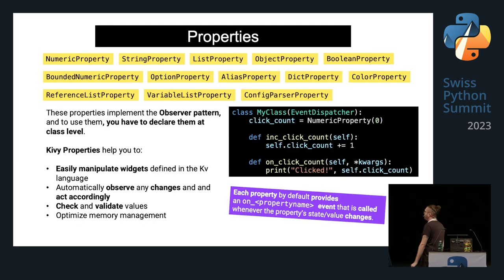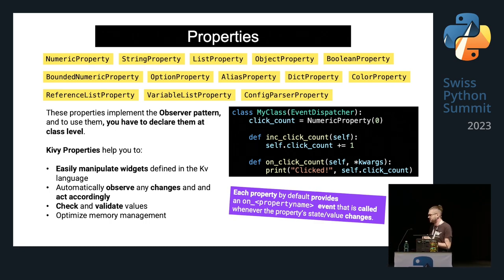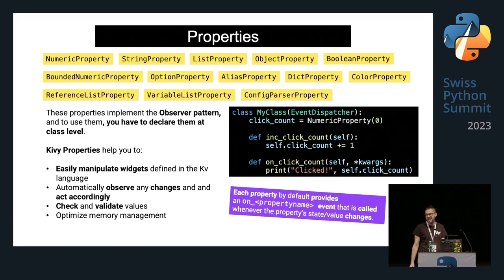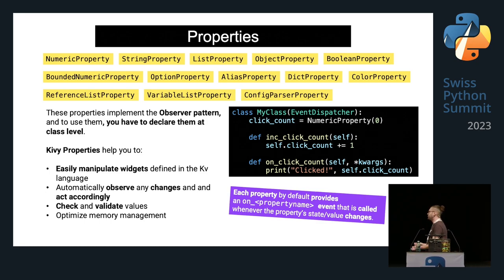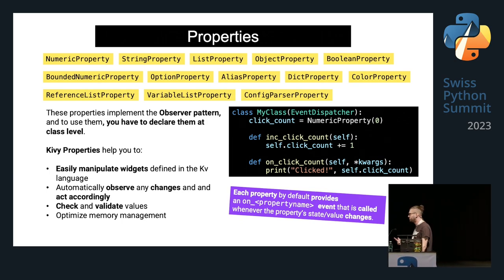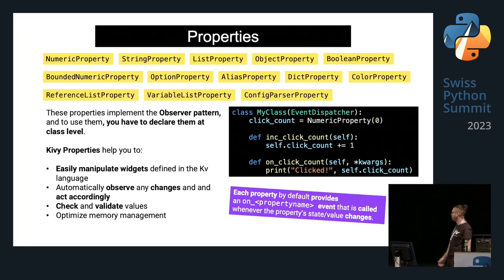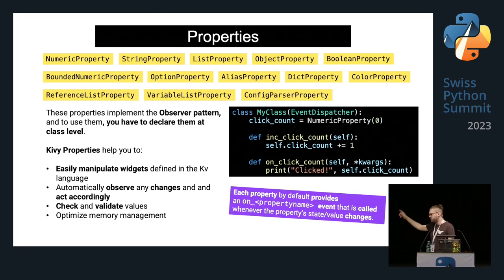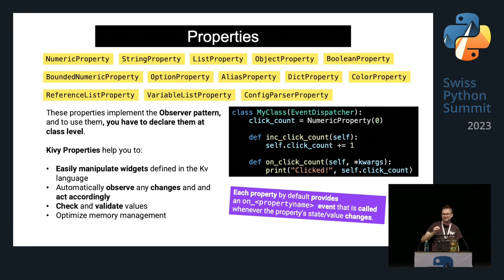Kivy works on properties, and there are many kinds: numeric properties, string properties, list properties, object properties, and so on. These properties implement the observer pattern and must be declared at the class level. Kivy properties help you easily manipulate widgets, automatically observe changes in order to validate values, and optimize memory management. Each property provides an on_property_name event that is called whenever the property's value changes.